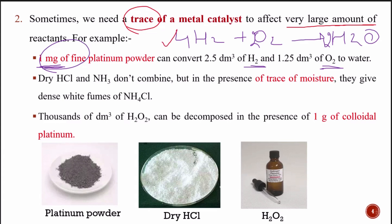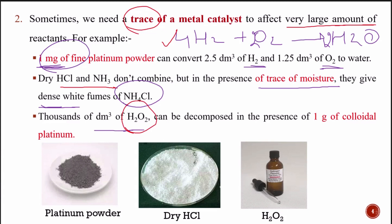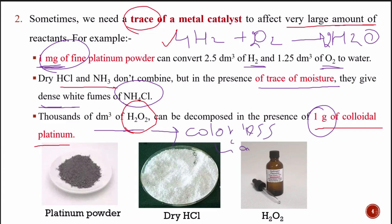Also, dry HCl and NH3 are combined but without a catalyst this reaction is not happening. When we add a catalyst, we get dense white fumes of ammonium chloride. Another example: 1,000 dm³ of hydrogen peroxide (H2O2), which is a colorless liquid with a bitter taste, can be decomposed by just 1 g of colloidal platinum.